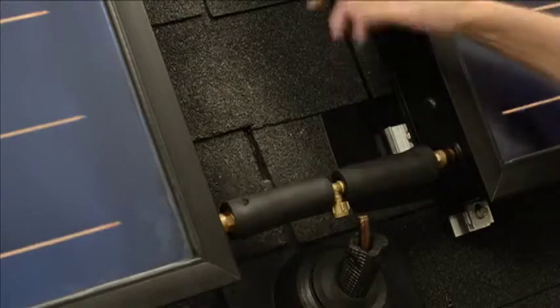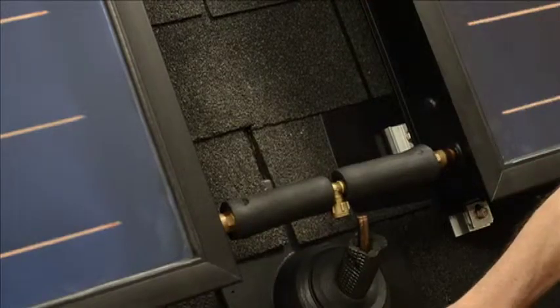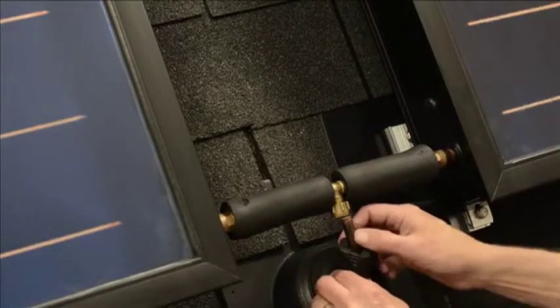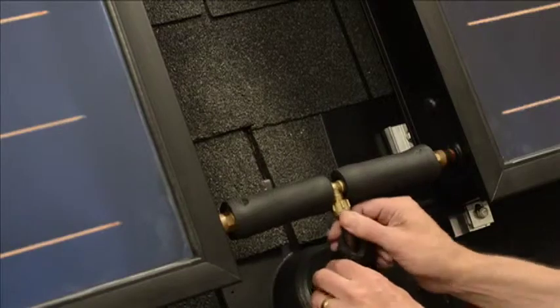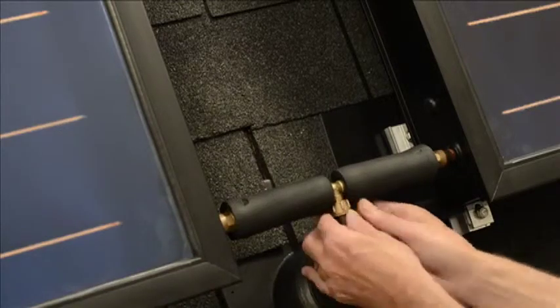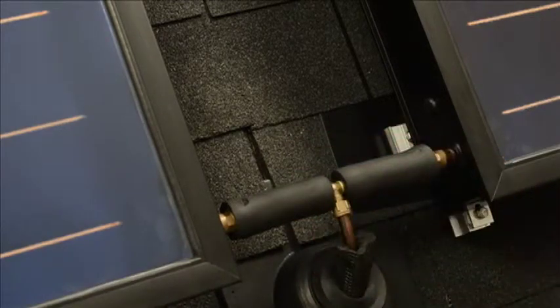With our T in place top and bottom, and our roof boots in place, and our line sets up through the roof, we can now connect the line sets to the T, tighten all these connections, and we're ready for fluid.